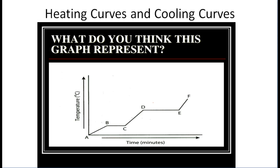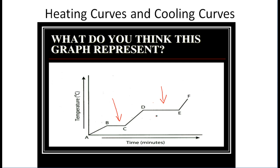We have a graph in this picture here. What do you think this graph represents? If we take a look at this graph, we have a substance — it can be any substance — and this substance is heating up over time. There are certain areas on this graph where the temperature stops increasing or plateaus. This is a heating curve, and in this video I want to explain what heating curves and cooling curves are, using examples with water.